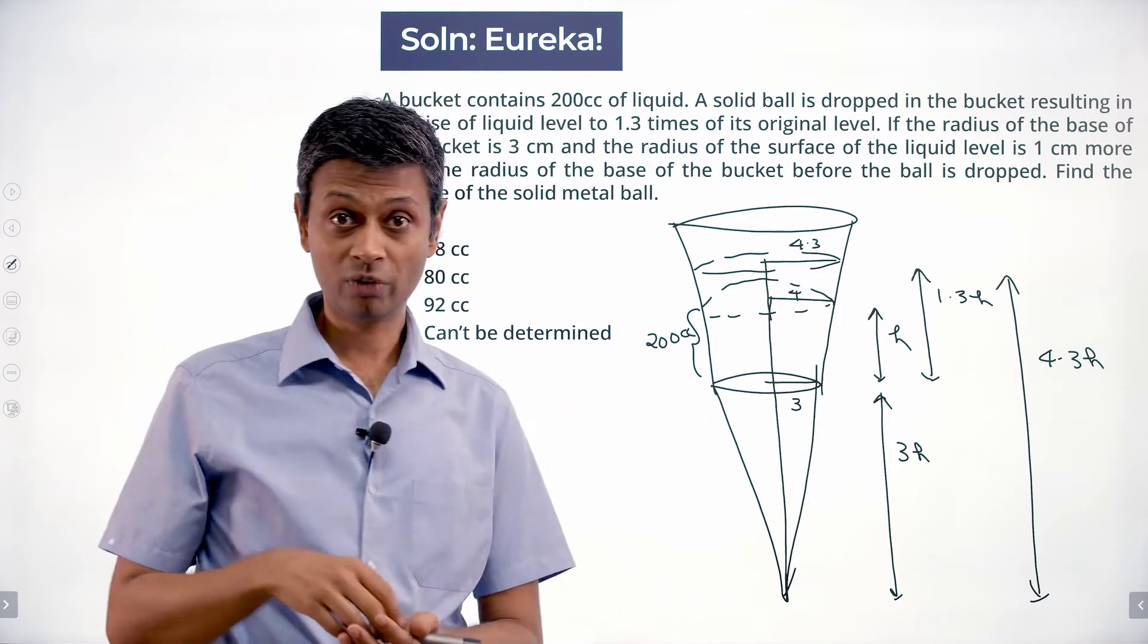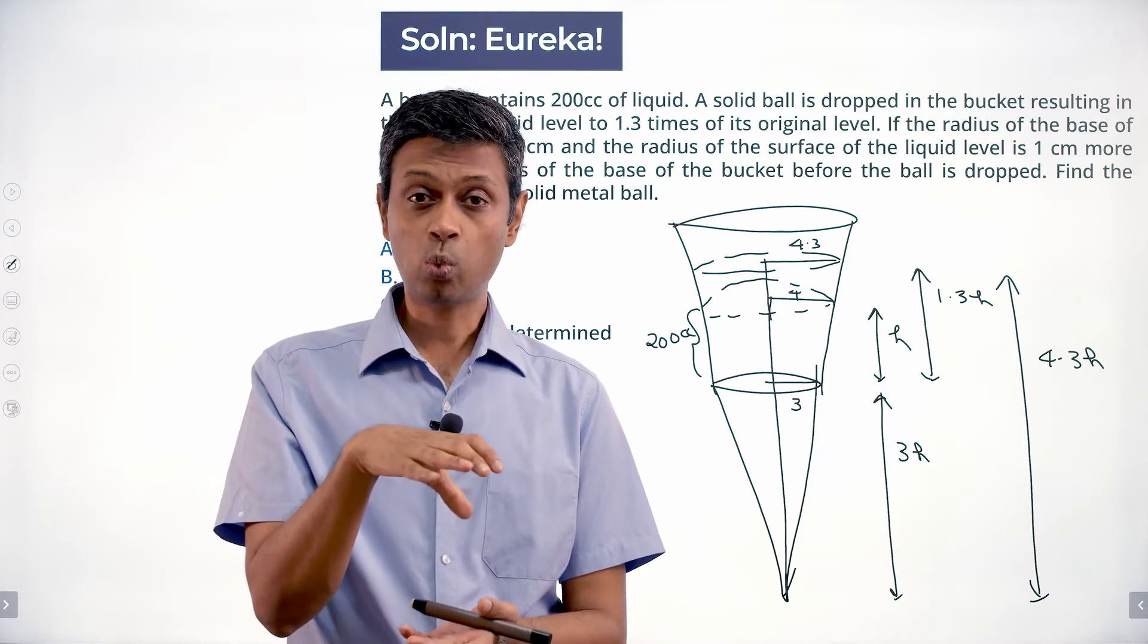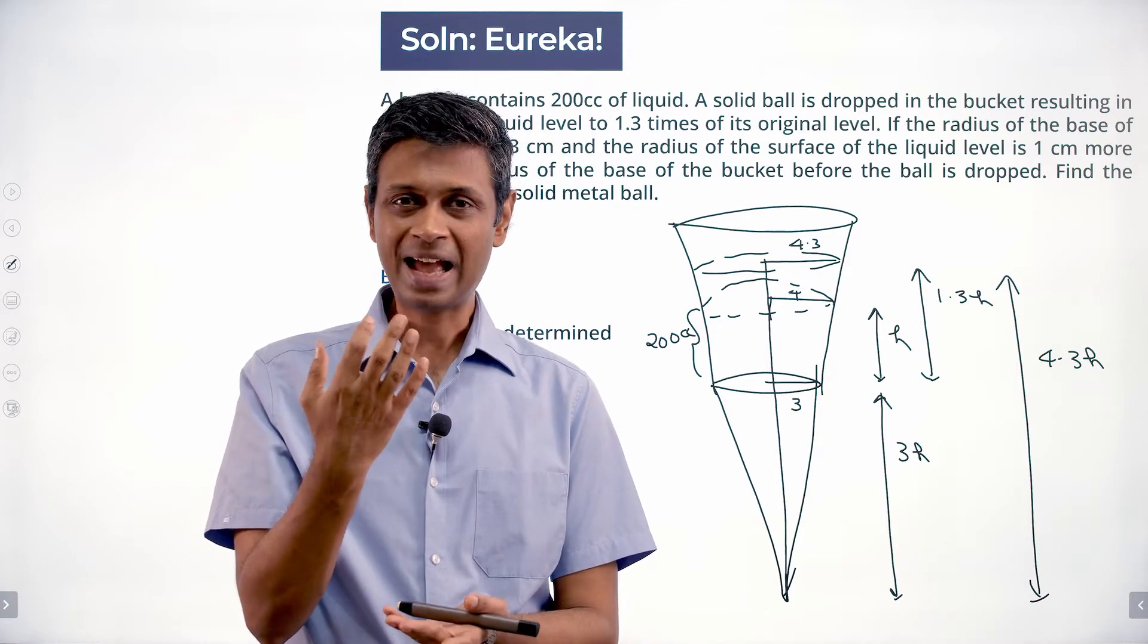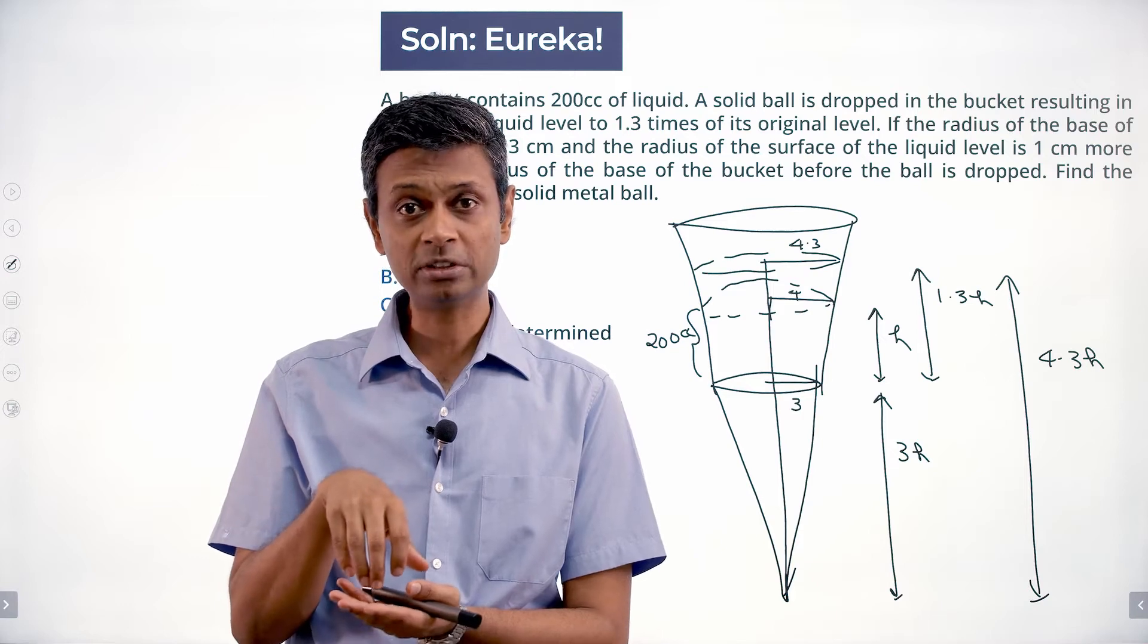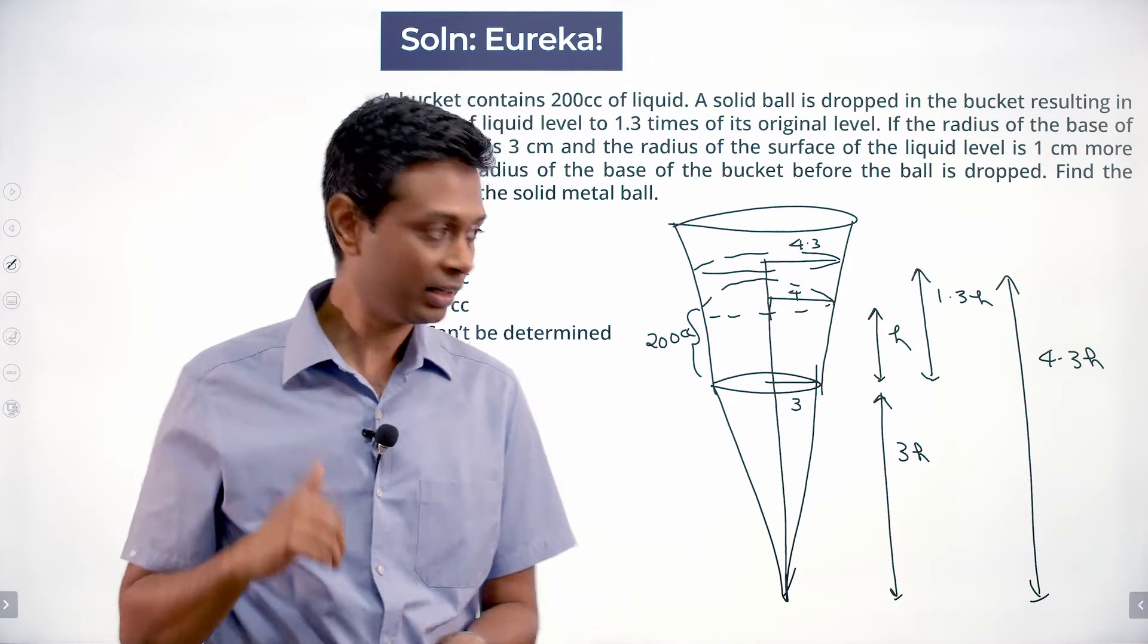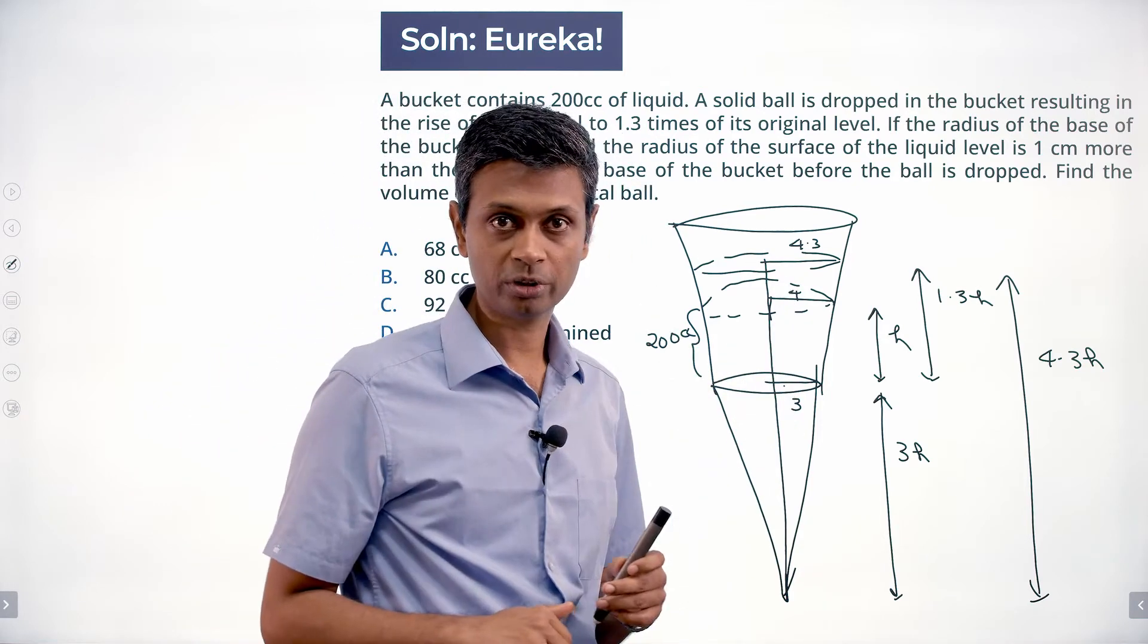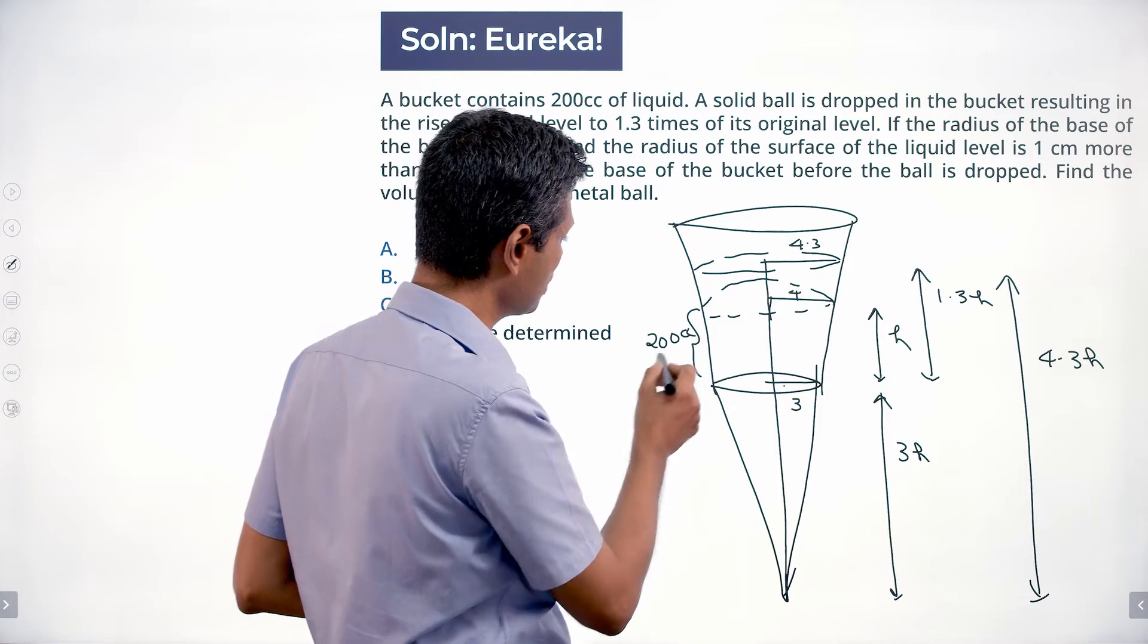So when the solid ball is dropped, the water level rises. Then the water column that is added has a base radius of 4 centimeters and a top radius of 4.3 centimeters. Our original bucket had a base radius of 3 centimeters and a top radius of 4 centimeters. So if this frustum measures 200 cc, what will this frustum measure?